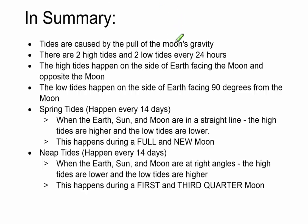In summary, the tides are caused by the pull of the moon's gravity. There are two high tides and two low tides every 24 hours. The high tides happen on the side of the earth facing the moon and opposite the moon. The low tides happen on the side of the earth facing 90 degrees from the moon. So on the sides.